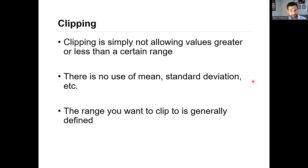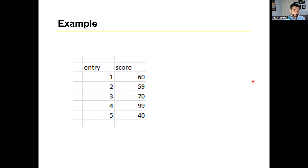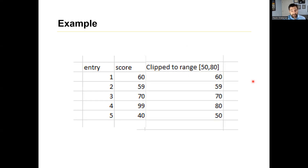The next topic is clipping. Clipping is simply not allowing values to be greater than or less than a certain range. We're not necessarily using mean or standard deviation — you just know the range of values you want to clip to, and you set anything below the minimum to the minimum, and anything above the maximum to the maximum. Here we have a data frame with five rows — maybe test scores where the range is between zero and 100. When we clip to the range 50–80: the values 60, 59, and 70 don't change because they're within range. However, 99 is above the max, so that goes to 80, and 40 is below the minimum, so that goes to 50.